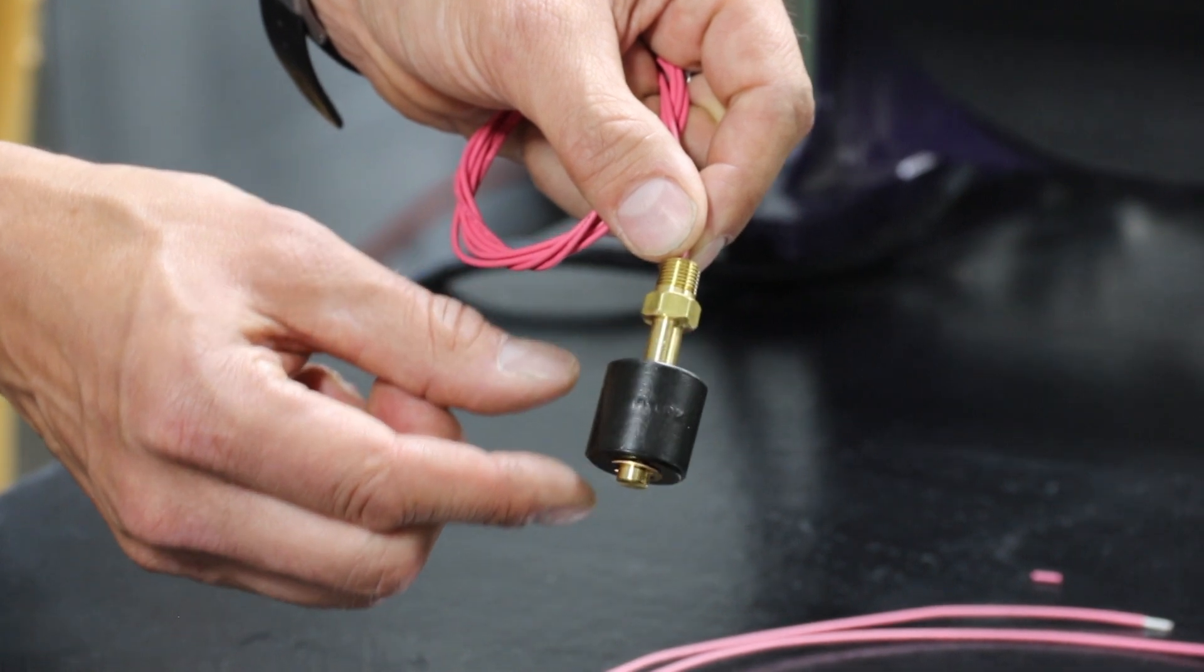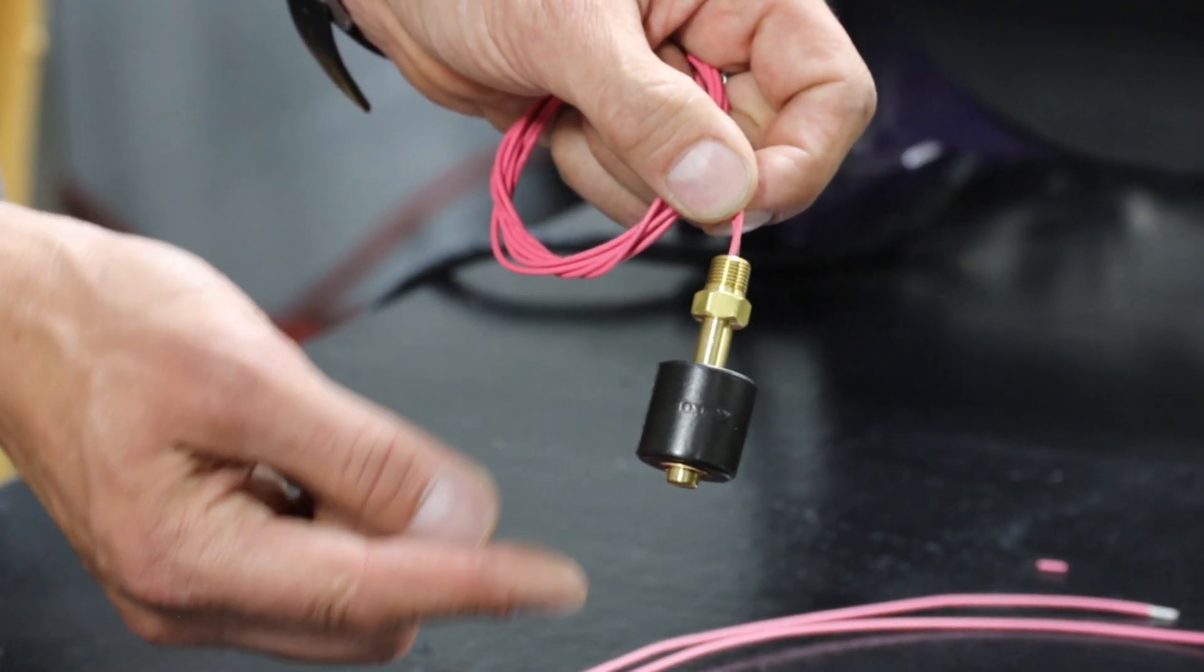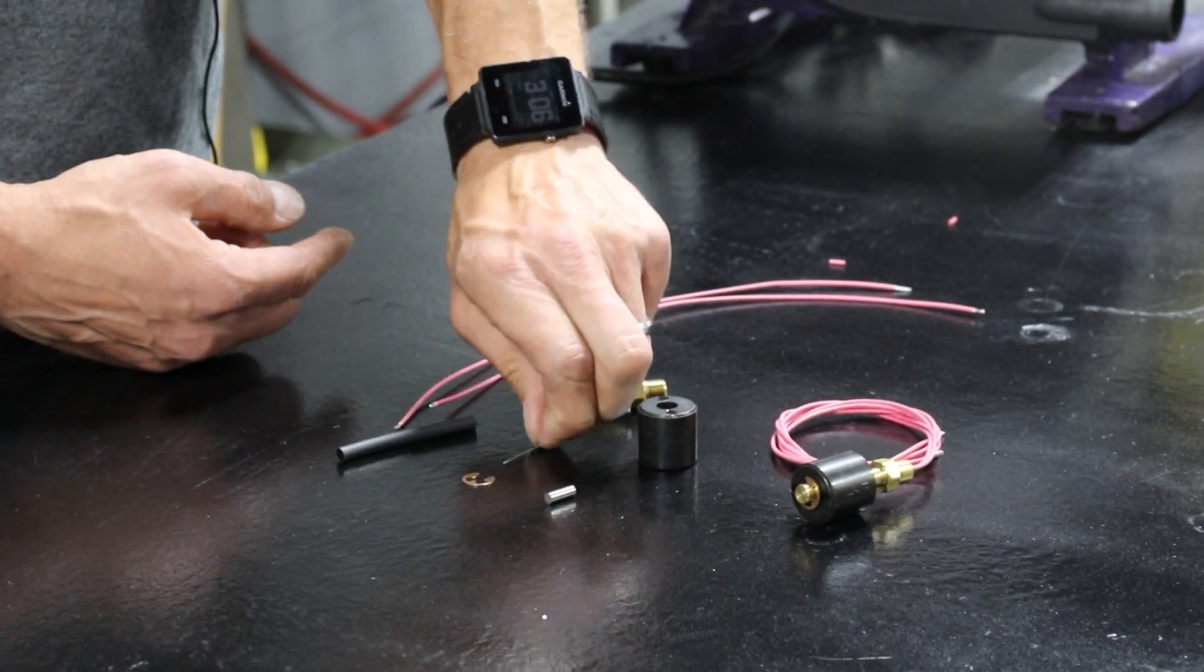The float moves up and down on a shaft as the liquid level changes. Now let's look at the components that make up the float switch.